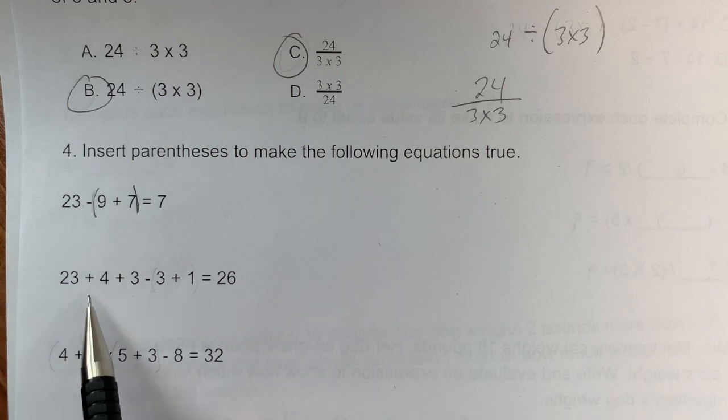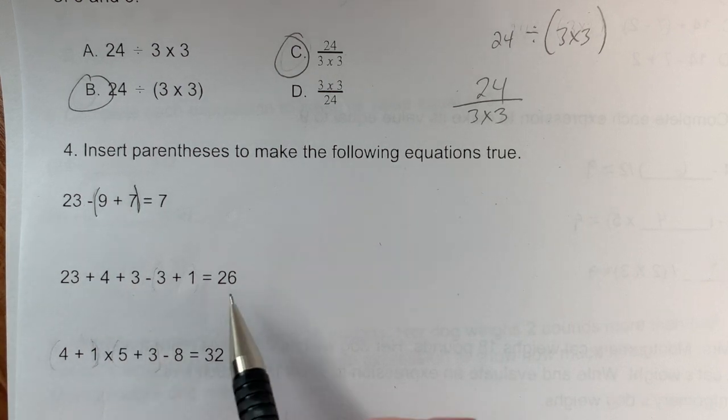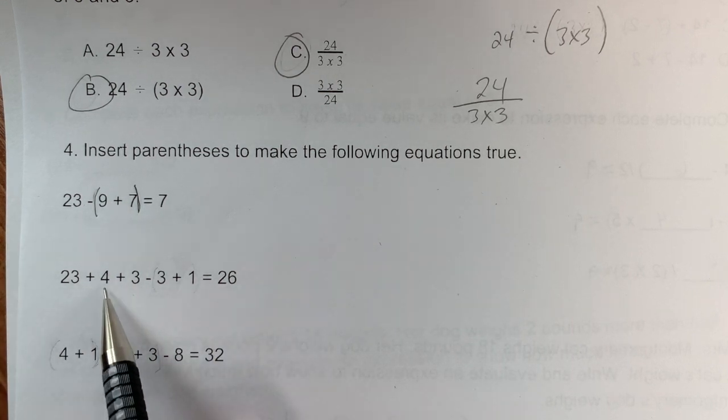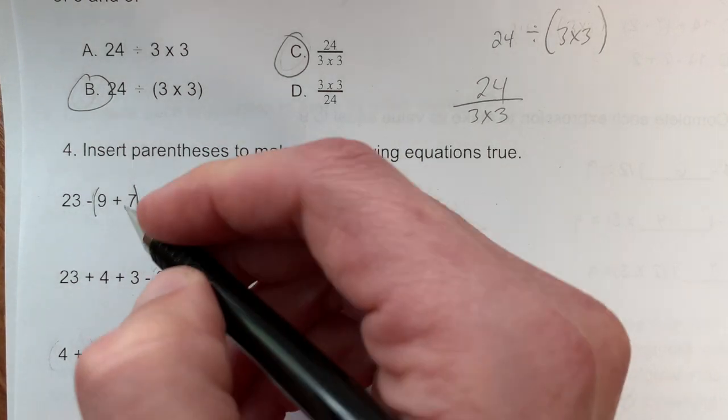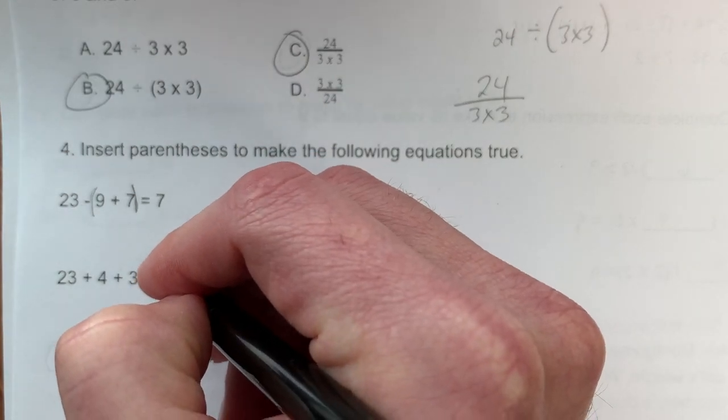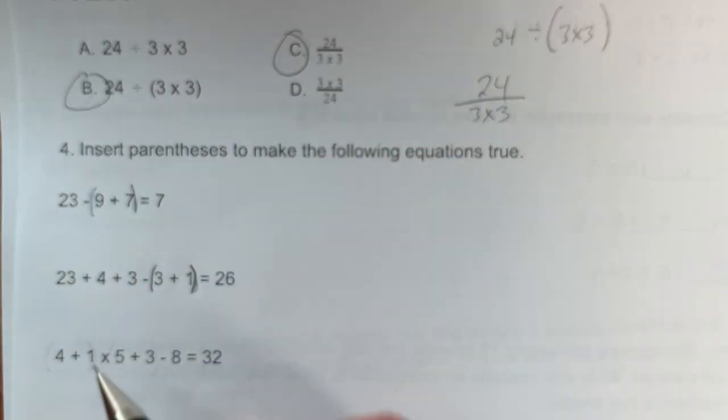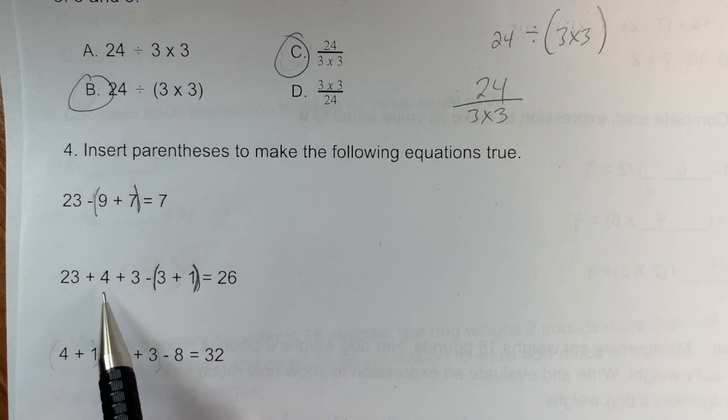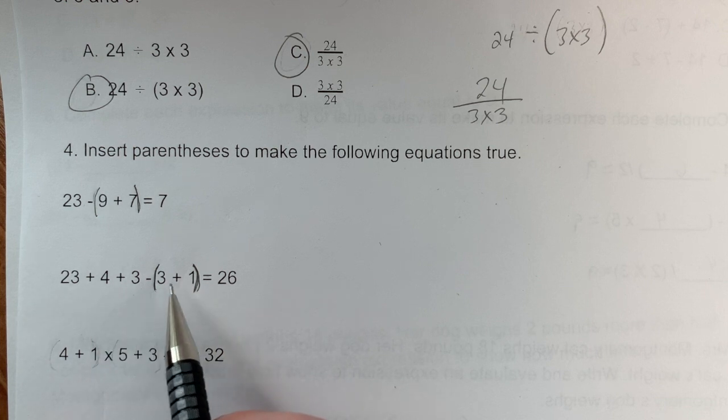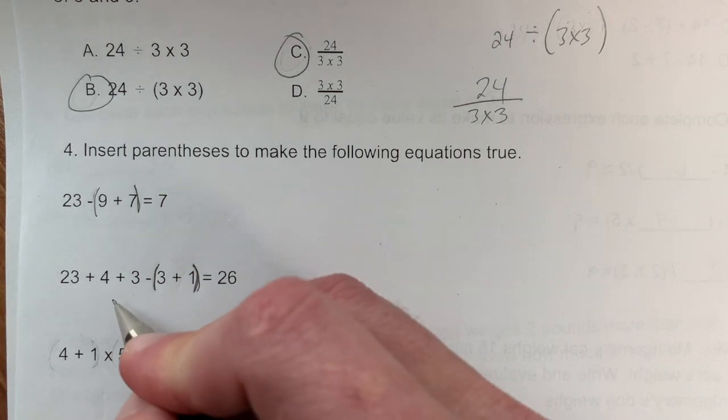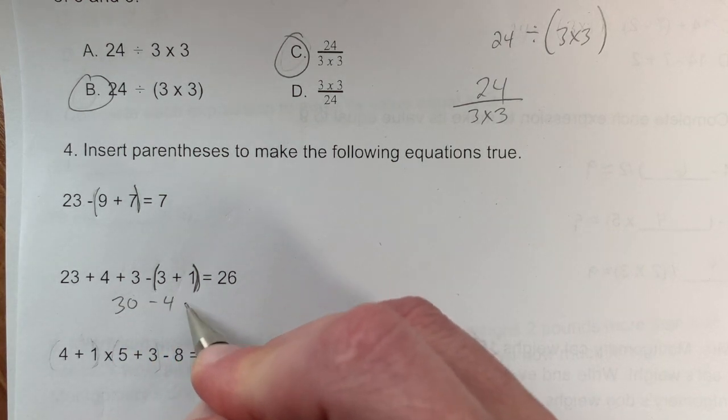Problem 4b: Make the equation equal 26. Going left to right with addition and subtraction: 23 + 4 = 27, + 3 = 30, - 3 = 27, + 1 = 28, which is 2 greater than 26. I need to reduce it. If I group the subtraction: 23 + 4 = 27, + 3 = 30, then 30 - 4 = 26, which works.